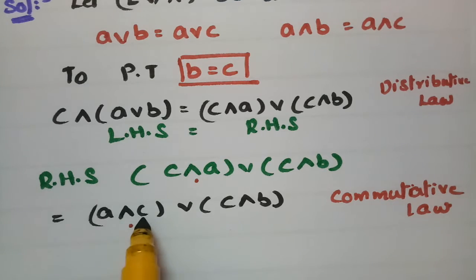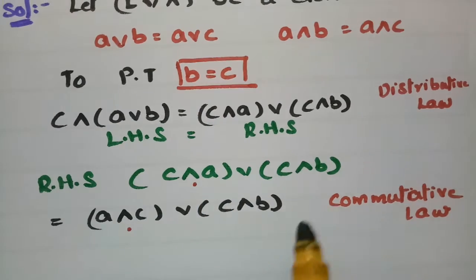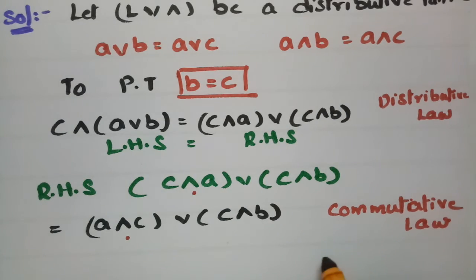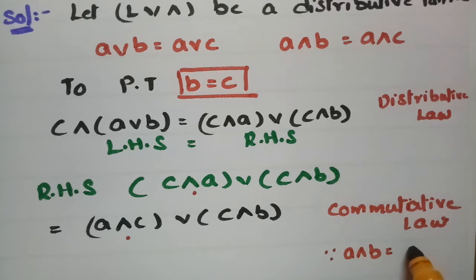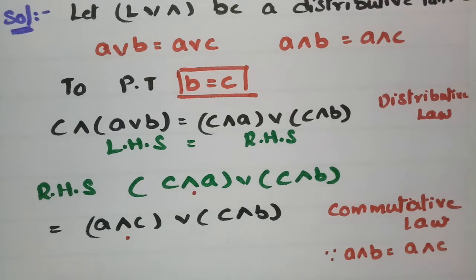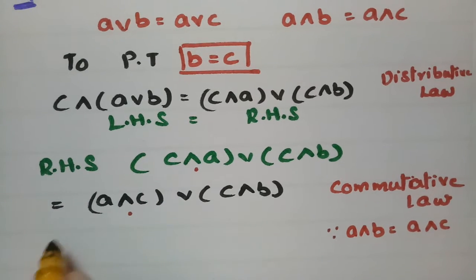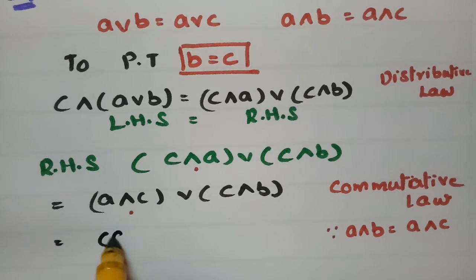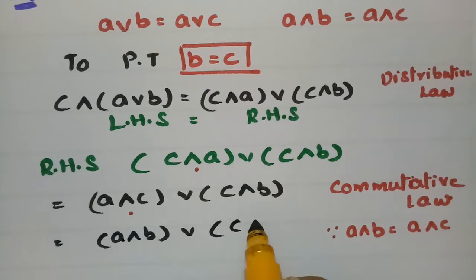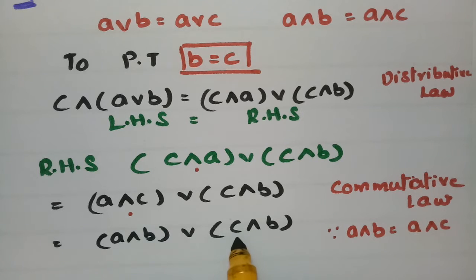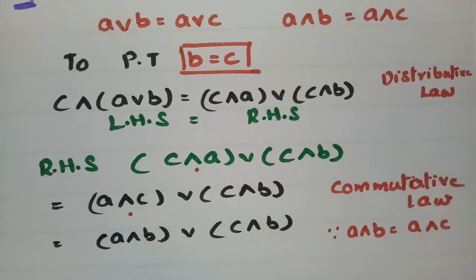In place of a∧c, I can write a∧b, since it is given that a∧b = a∧c. So substituting, the RHS becomes (a∧b)∨(c∧b).